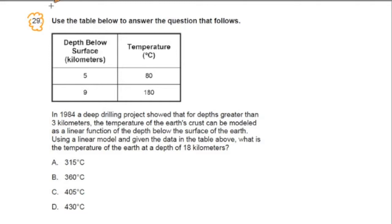I'll start by reading over number 29 and then we can work through some of the math here. First, let's start by reading it over. It says for number 29, use the table below to answer the question that follows. Depth below surface in kilometers and temperature in Celsius. Now we have at 5 kilometers below the surface, temperature is 80 degrees Celsius. And at 9 kilometers below the surface, temperature is 180 degrees Celsius.